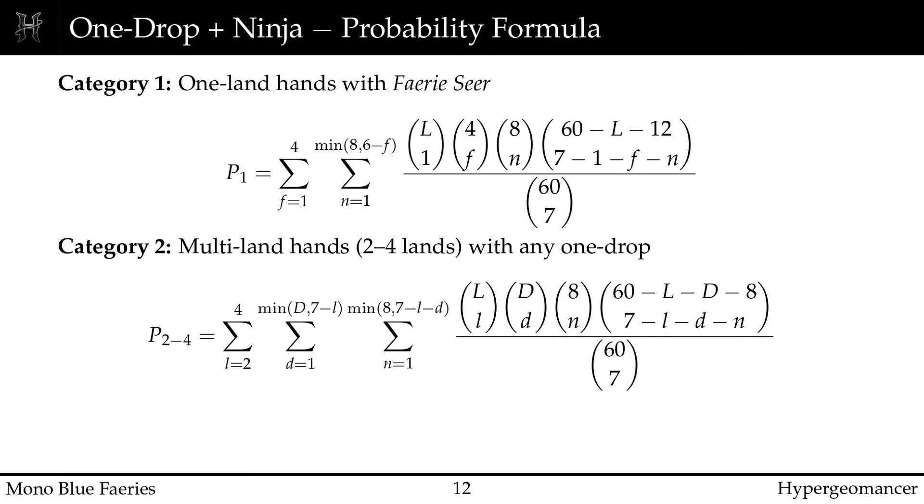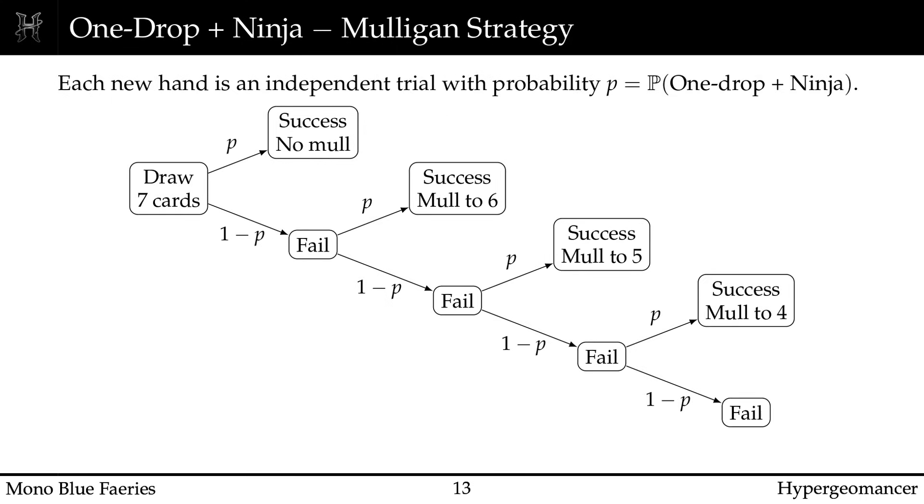For an 18 land deck with 17 one-drops, the probability of opening with this core combination is only about 44%. More than half of the time, your opening 7 doesn't do what your deck is built to do. This is why mulligans are not optional, they are essential. Each mulligan is another independent attempt to hit this combination. 1 mulligan jumps your probability to 68%, 2 mulligans push it to 82%, and 3 mulligans reach nearly 90%. The cost of going down a card is far outweighed by executing your strategy.